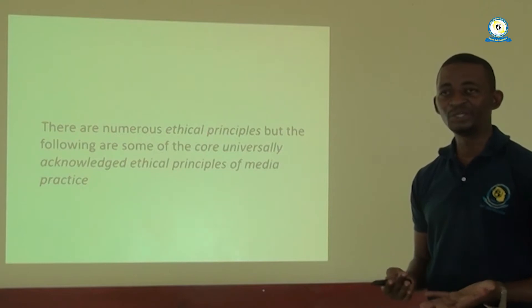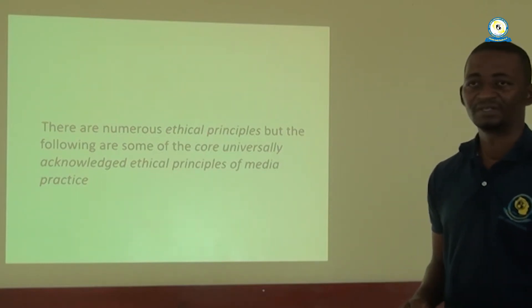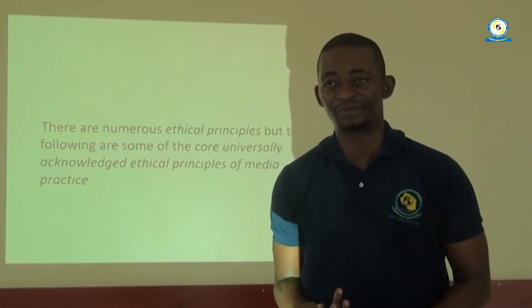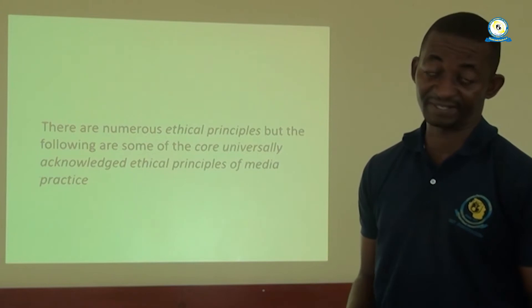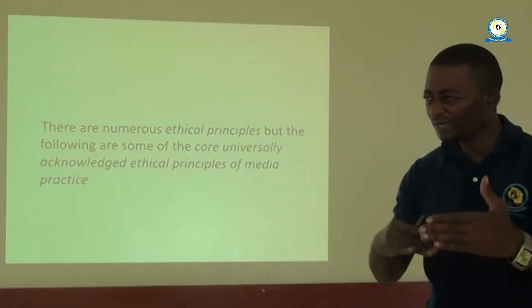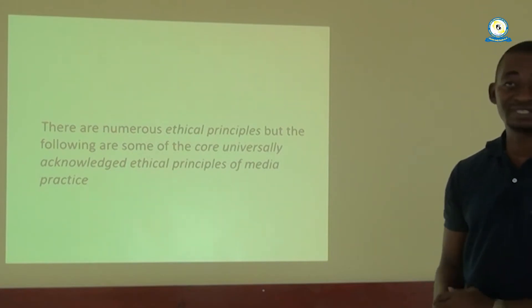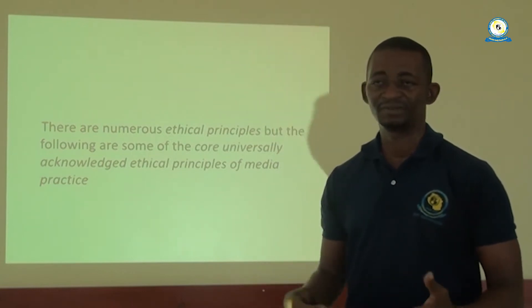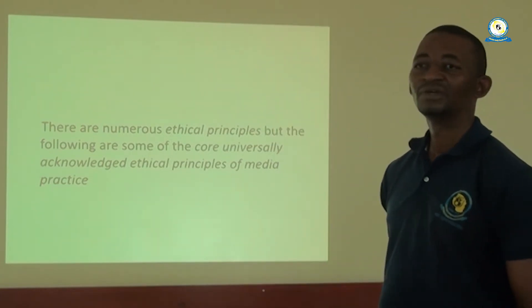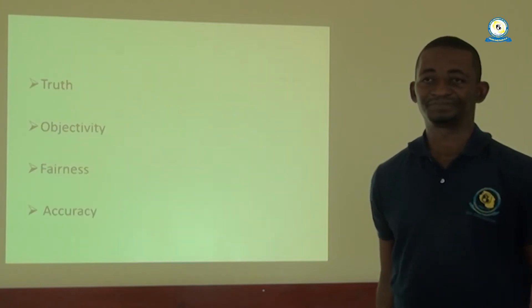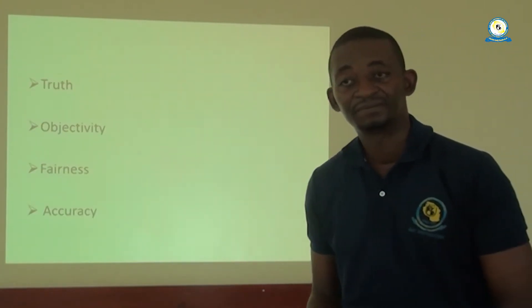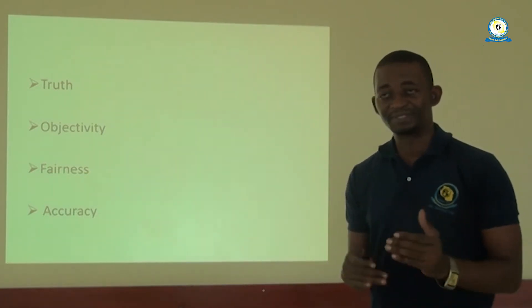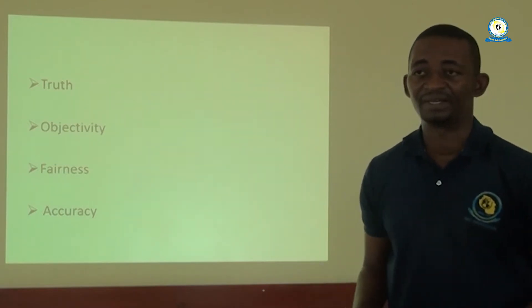When we talk about these principles, there are numerous ethical principles. But the following are the core, universally acknowledged ethical principles of media practice in general. There could be so many principles around, but the following that we are going to discuss are the core principles that journalists face always. We have truth, objectivity, fairness, and accuracy. These are some of the ethical problems that most journalists face in day-to-day endeavours.